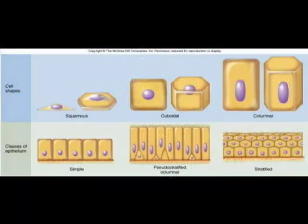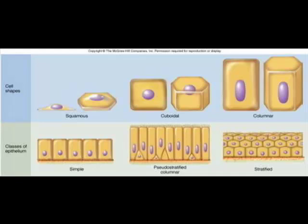Epithelium is classified in two different ways. The first way is by the shape of the cells themselves. There are three basic shapes. One is called squamous, which is a flat tile-shaped cell. Another is called cuboidal, which is square and cube-shaped. And the other is called columnar, which are more rectangular in shape, like a column. There are a couple of exceptions that we'll talk about as we move on.